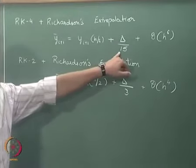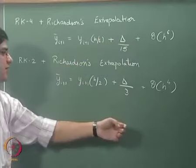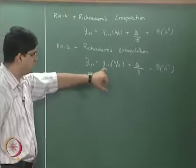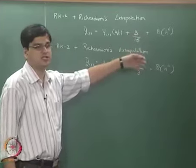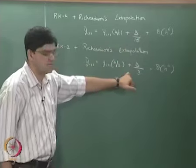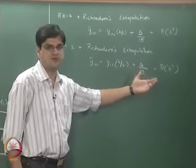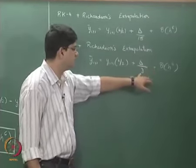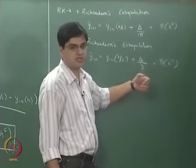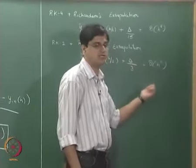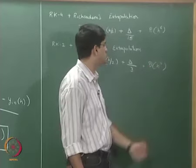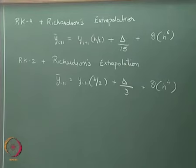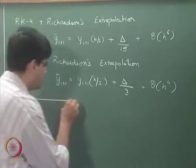How does this 15 come in? It comes from 2^4 minus 1. Likewise, the 3 comes from 2^2 minus 1. The exponent is the order of accuracy minus 1: the local truncation error is h^5 accurate for RK4 and h^3 accurate for RK2, so the exponent for 2 is one less than the local truncation error order. It is 2^2 minus 1 that gives 3, and the overall accuracy increases by one order — from h^3 to h^4 for RK2, and similarly for RK4. These are the results of Richardson's extrapolation.